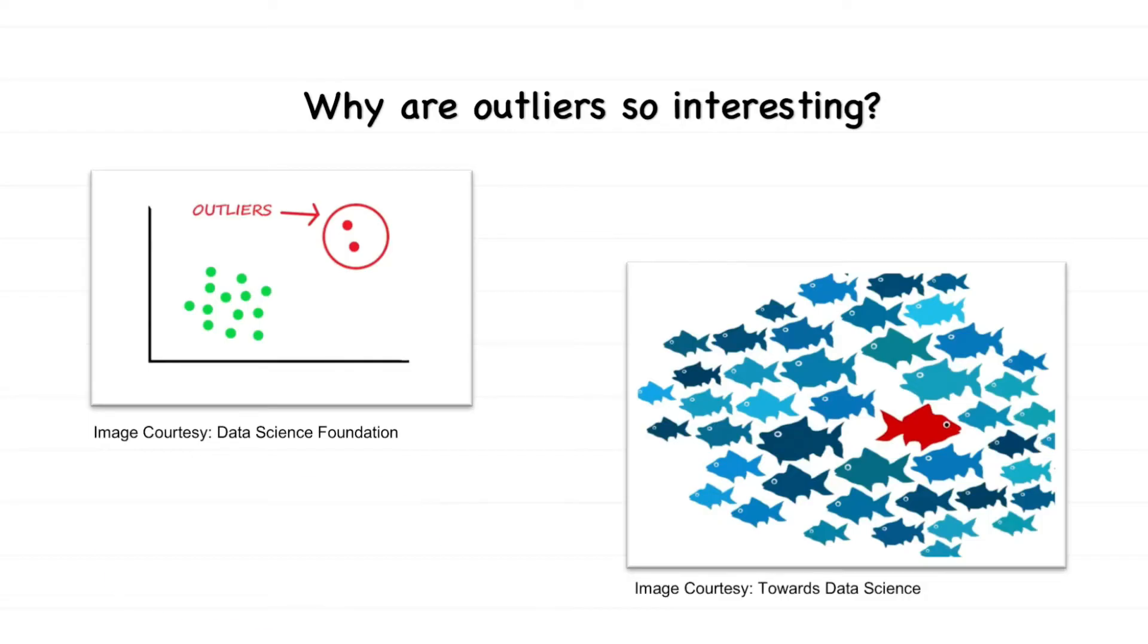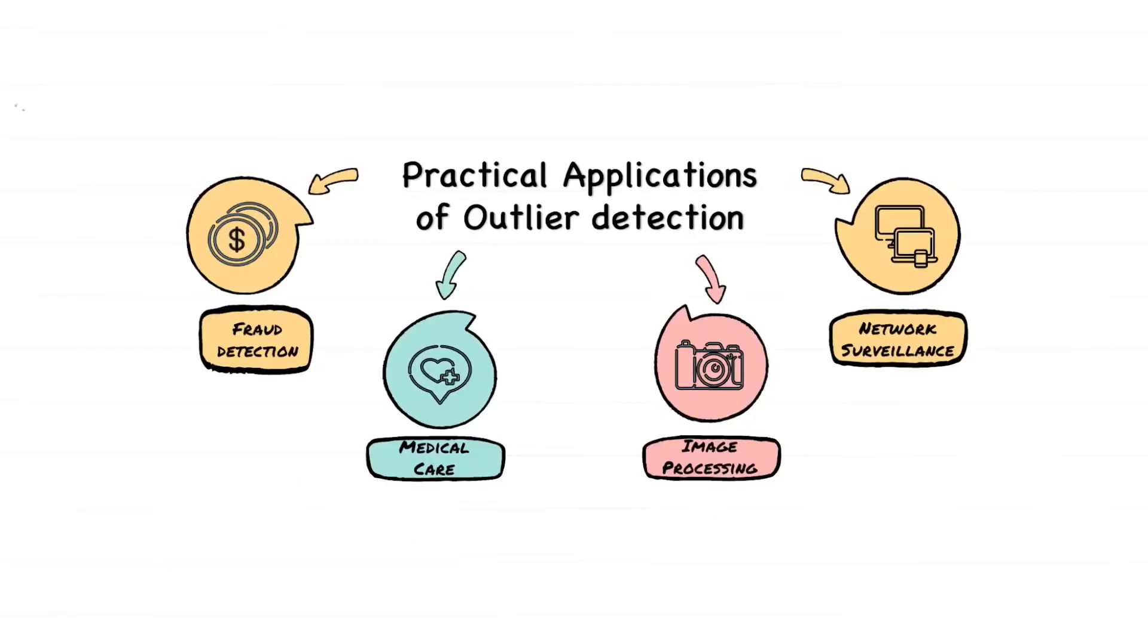Here are some of the leading applications of outlier detection: credit card fraud detection, medical care, image processing, and network surveillance.